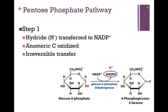In step 1, we convert glucose 6-phosphate to a lactone. It involves a transfer of a hydride ion to NADP+ to form the first of two molecules of NADPH, so it is an oxidation. The anomeric carbon has been oxidized to form that lactone ring, and you can see the carbonyl group highlighted in red. This is an irreversible transfer, and so we highlight that by the one-way arrow.